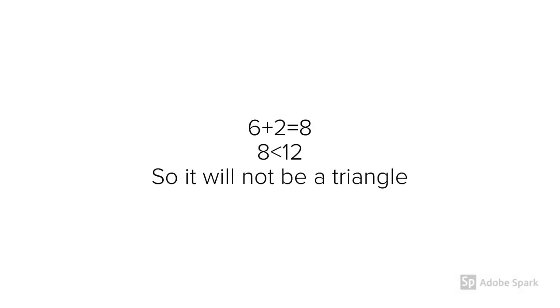6 and 2 are the smallest numbers of the trio. If you add up the smaller two numbers, you must get a length that is greater than the longest line, so it will not be a triangle. No sir.